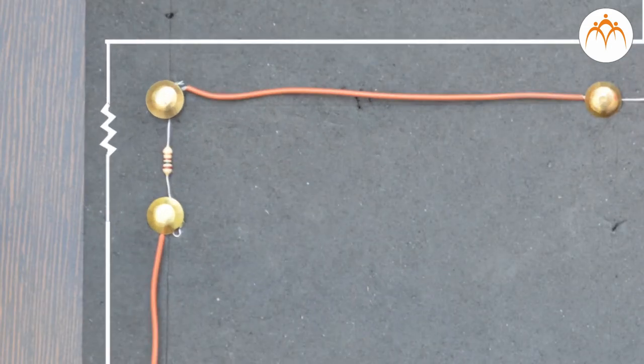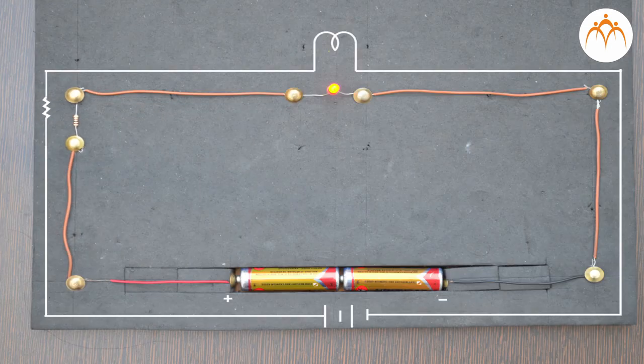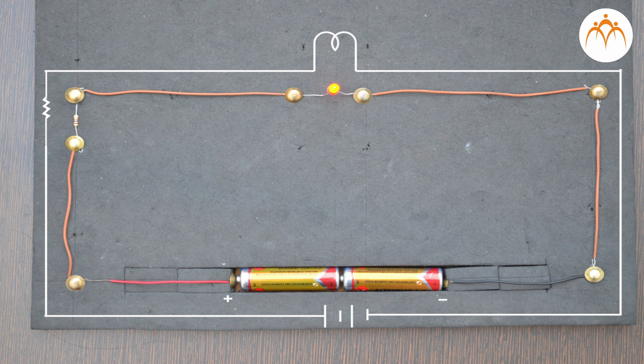That's the symbol of a resistor: a bunch of zigzag lines. It doesn't matter how many zigzags are there; it resists the flow of electrons in the circuit.